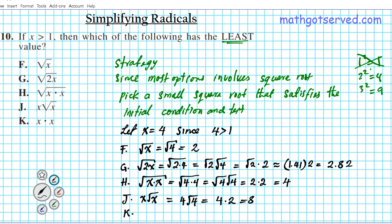And then lastly, K, x times x. x times x is going to be 4 times 4, which is equal to 16. Now, since we use a concrete test value here, we can easily compare the results to see which is the least. So the smallest out of all of them is option F. Okay? Square root of x is the smallest.